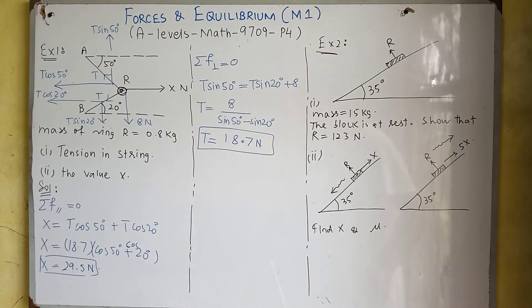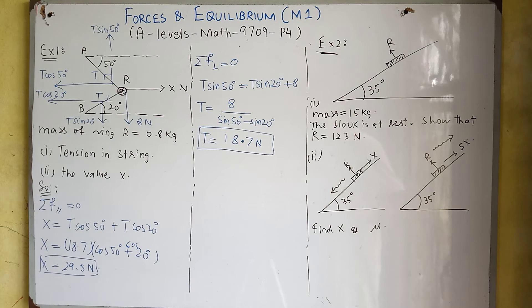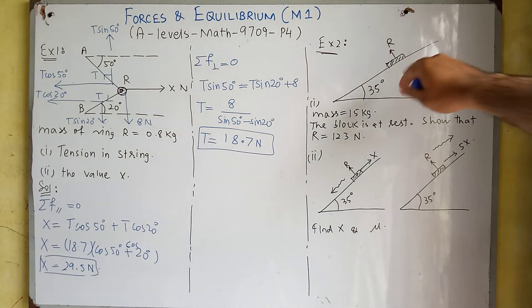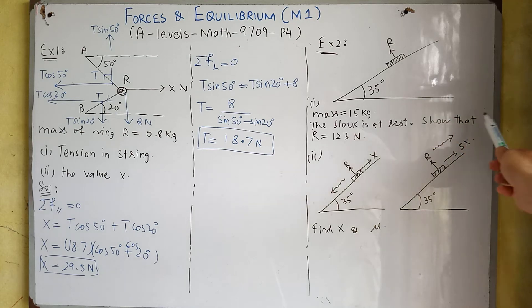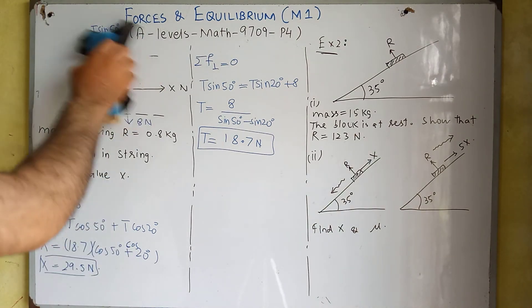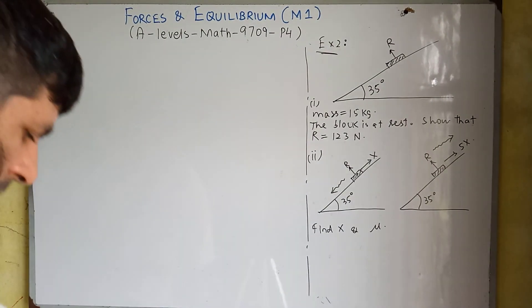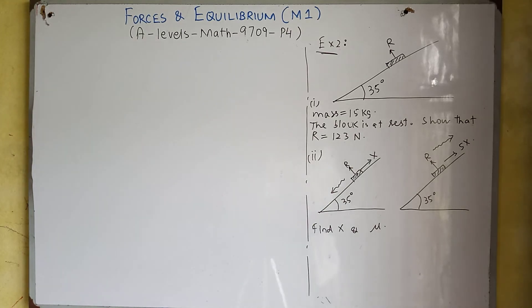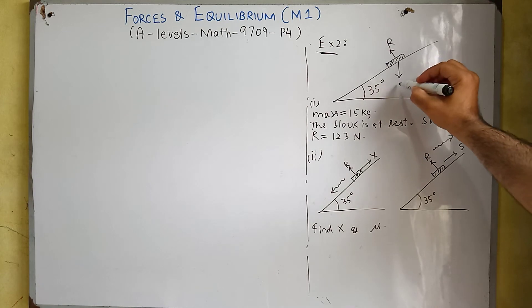Now look at the next example. We have a surface making an angle of 35 degrees with the horizontal axis, and there is a body of mass 15 kg on it. In the first part, this block is at rest and we need to show that the reaction force is 123 newton.